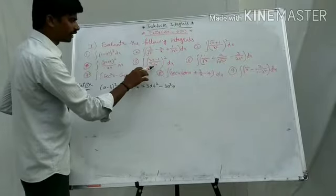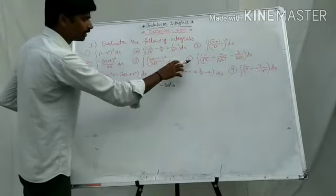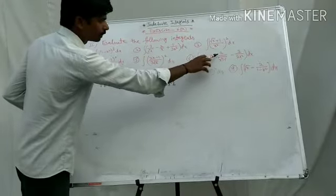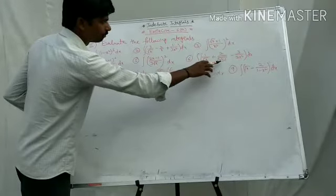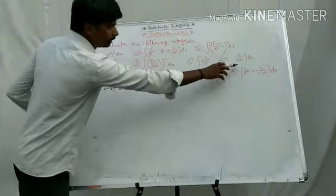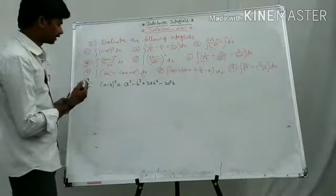Fifth one: integral of (2x minus 1 by 3 root x) whole square dx. Sixth one: integral of 1 by root x plus 2 by (root x squared minus 1) minus 3 by 2x squared dx.